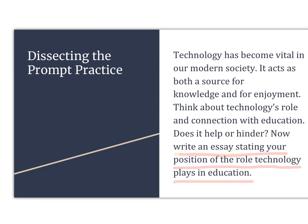Our writing prompt here is: 'Write an essay stating your position on the role technology plays in education.' Step one: read the whole prompt. Step two: find the prompt sentence — it's the last line most of the time. Step three: underline it. Step four: find the keyword and circle it. Here the keyword is 'position.' Step five: identify the writing type. 'State your position' — that is argumentative, so I'm going to put an A there to represent argumentative.